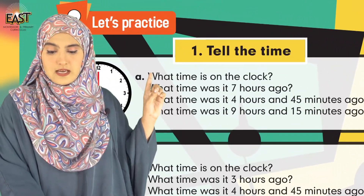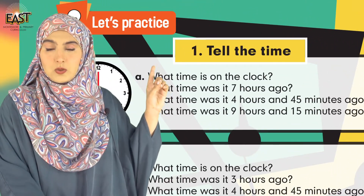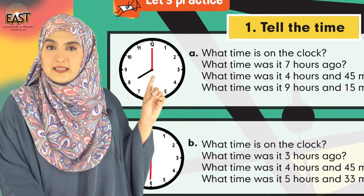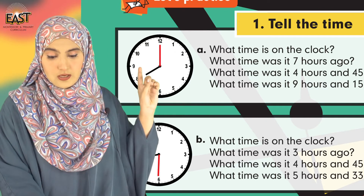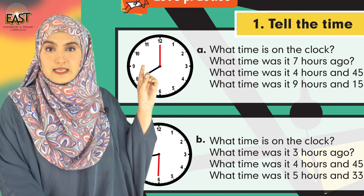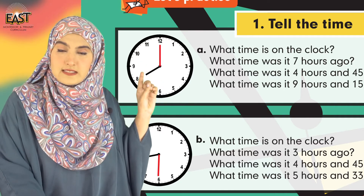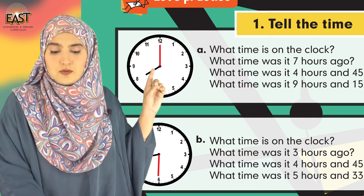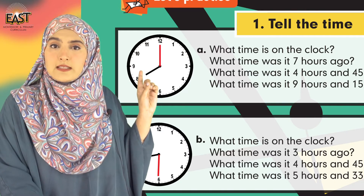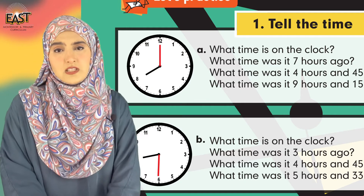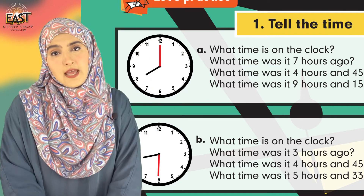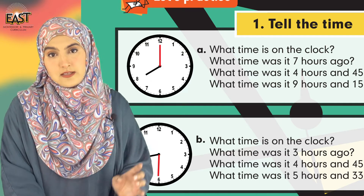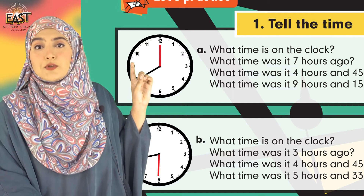Part A: What time is it on the clock? Clock mein abhi time kya ho raha hai? Please read this clock which is given in Part A. You can see it's eight o'clock. How do we know it's exactly eight o'clock? The small hand is on eight, and the large hand — the arrow — is pointing towards twelve.